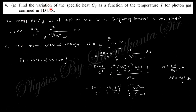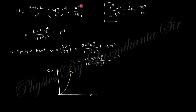Question 4: find the variation of specific heat C_v as a function of temperature for a photon gas. From black-body radiation, the energy density is known. For a 1D box the volume integral gives only the length L. Substituting x = hν/kT so that ν = kTx/h, the integral reduces to a standard form with value π⁴/15. Differentiating U with respect to T gives C_v ∝ T³.